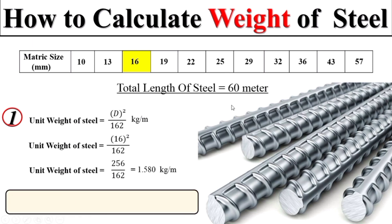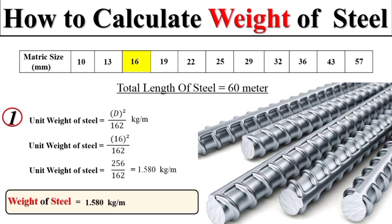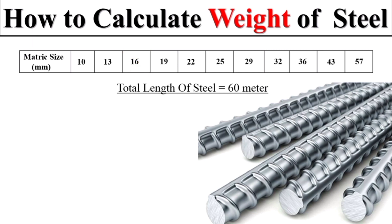Now we can easily calculate the total weight of 60 meters of steel. The total weight of steel equals the unit weight of the 16 mm diameter multiplied by the total length. The meter units cancel, and we get the total value in kilograms.